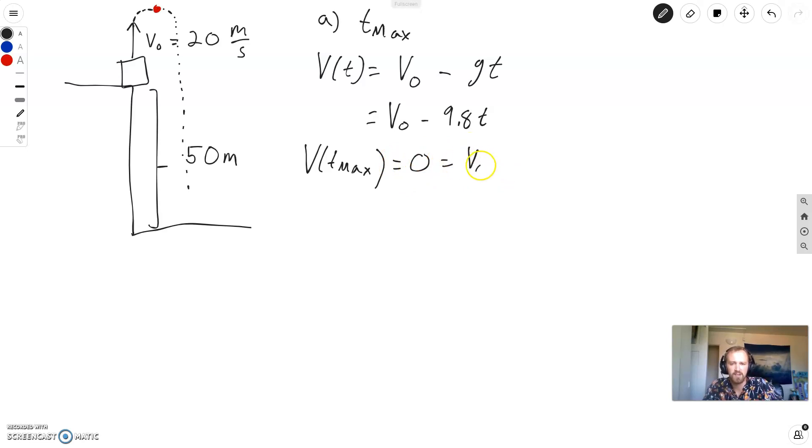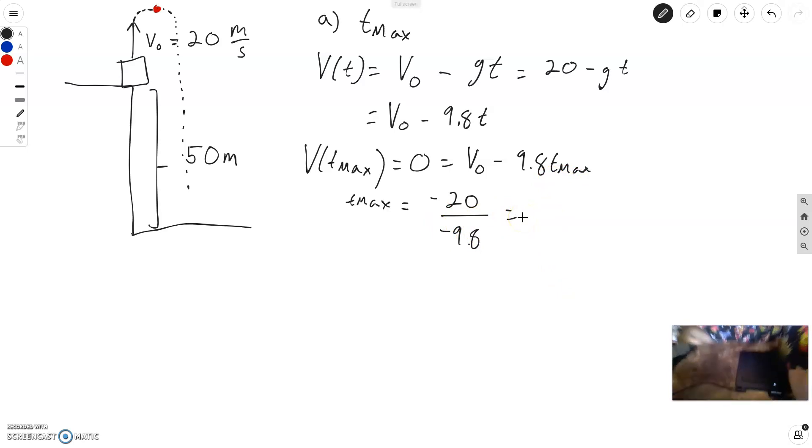And now if I plug in minus 9.8 T max, I can quickly solve T max. Remember V naught is 20. So this is 20 minus G T. So then T max equals negative 20 divided by negative 9.8. I'm just solving for T max here. And we will get 20 divided by 9.8, 2.04 seconds. So we just solved for the max time.